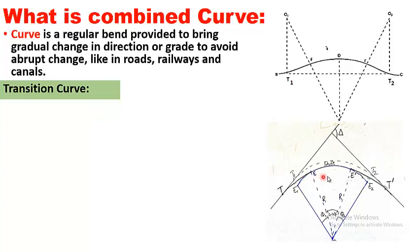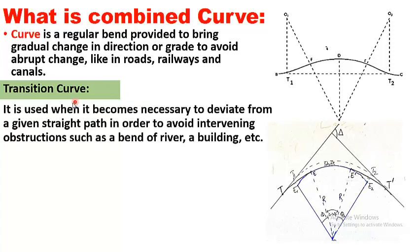A simple circular curve is actually a part of a circle; it is a type of arc and its radius is the same throughout its length — this is the simple circular curve from E to E'. The other one is the transition curve. A transition curve is used when it becomes necessary to deviate from a given straight path in order to avoid intervening obstructions such as a bend in a river or a building.